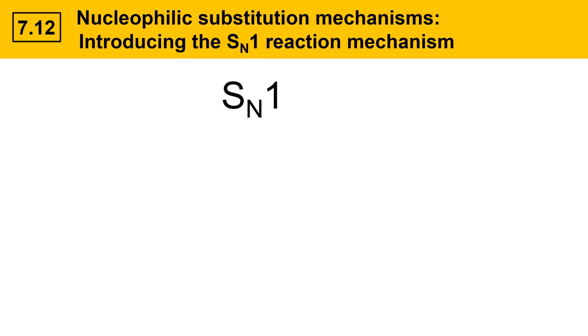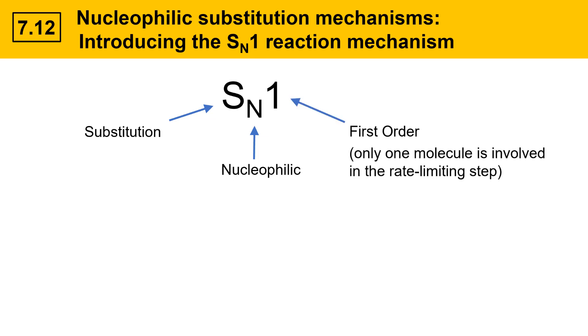Here, the S stands for substitution. That means a portion of the molecule is going to be substituted for by another portion. The N stands for nucleophilic. That means that a nucleophile is going to be taking the place of the group that's leaving. And then 1